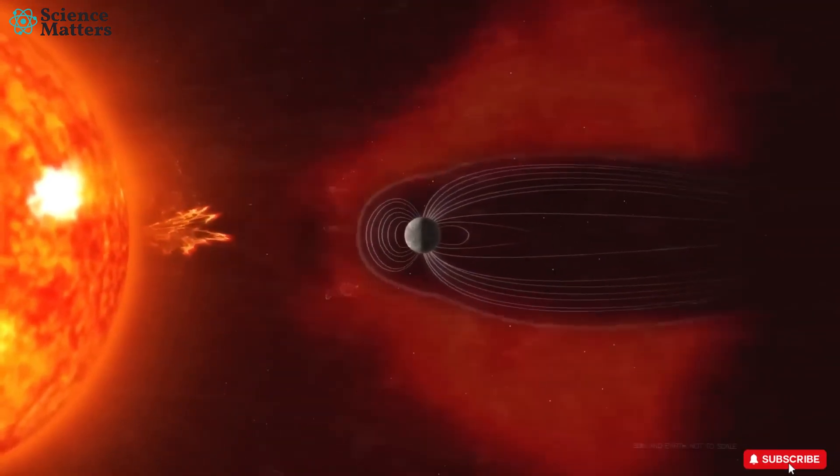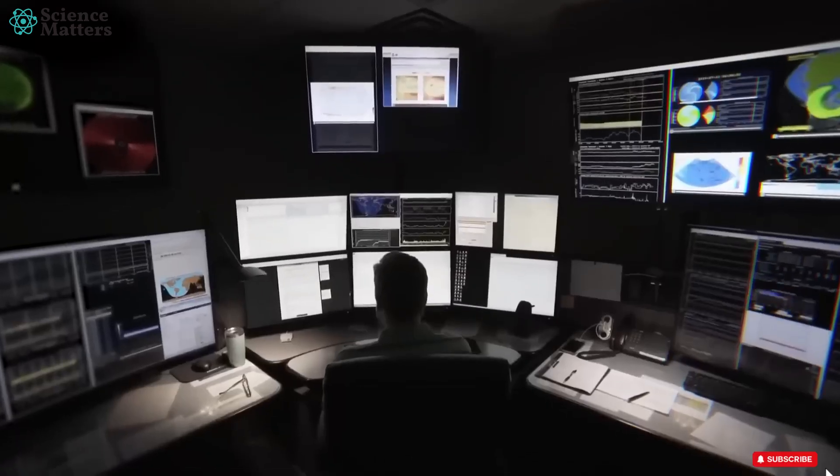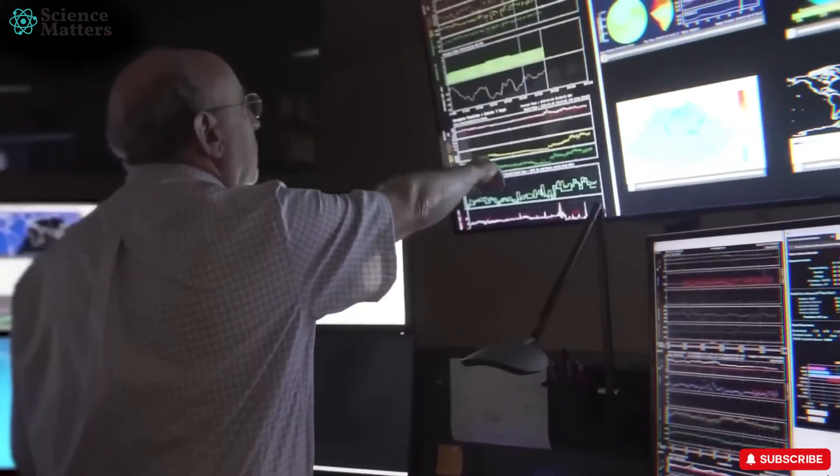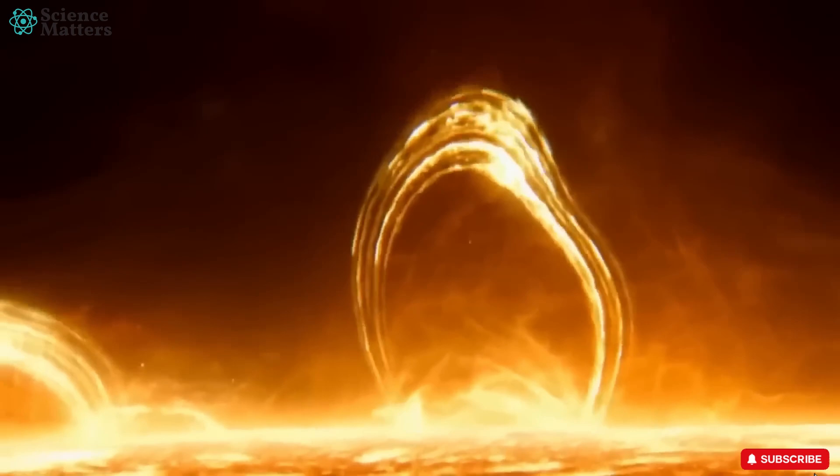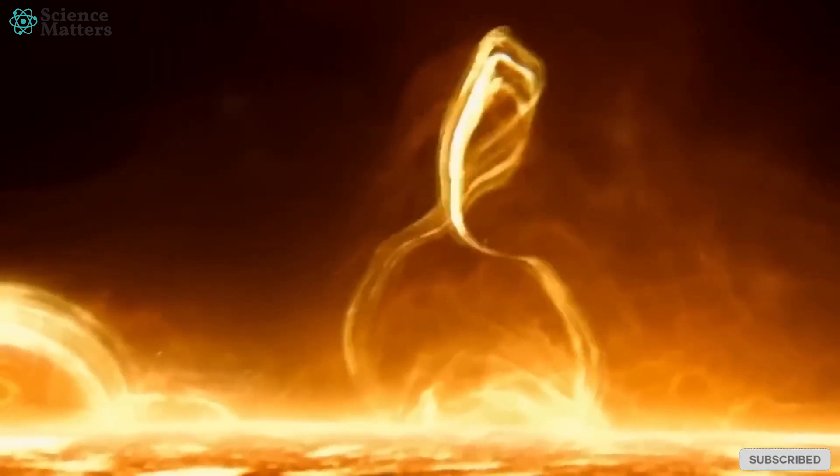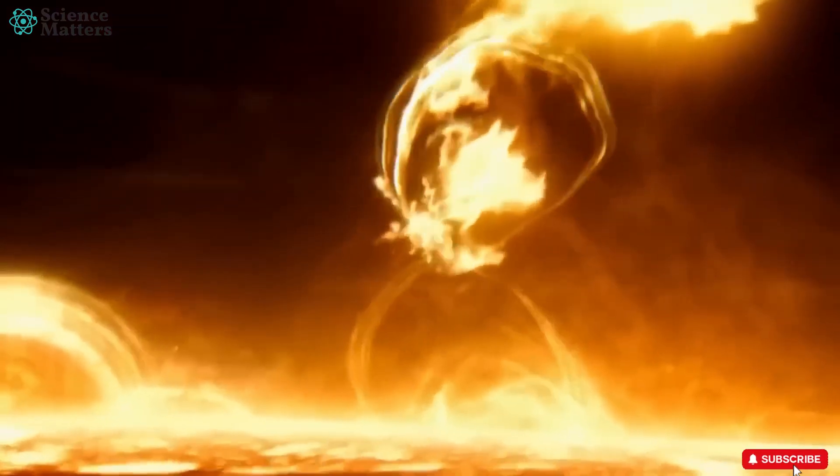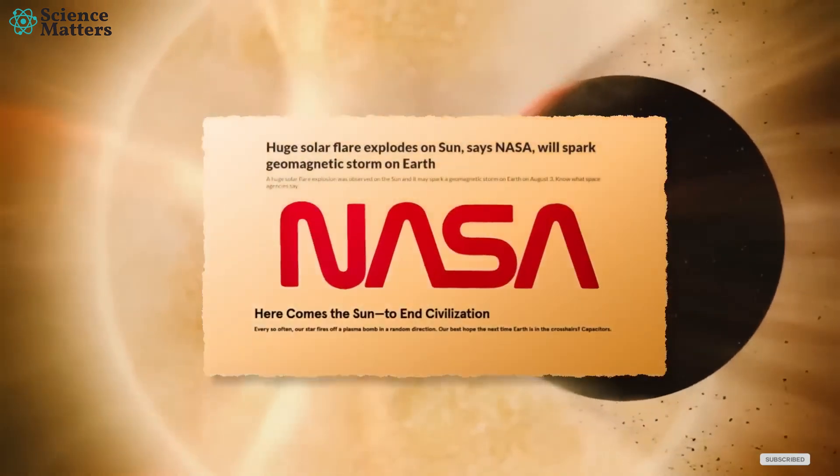But recently, according to NASA, the strongest solar flare to date is set to hit Earth in 2025. And do you know what will happen when it hits Earth? Well, according to NASA, it will mark the beginning of a catastrophic scene.